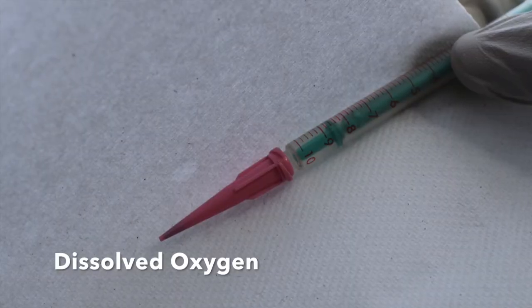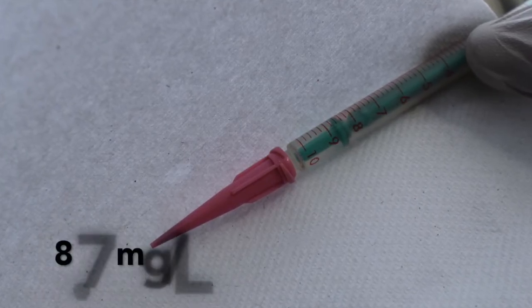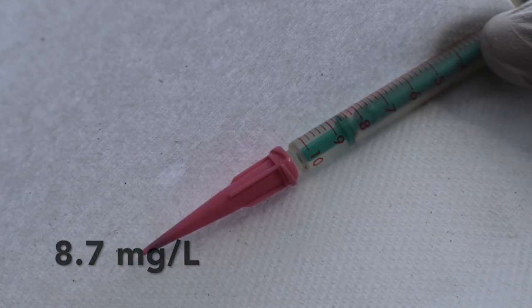At this point, we look at the titrator and read it based on the lowest ring in the plunger. This one displays 8.7, which is our dissolved oxygen value in milligrams per liter.